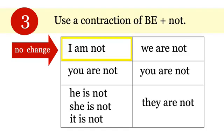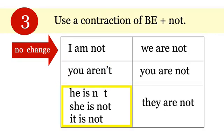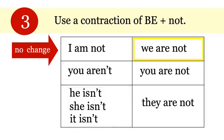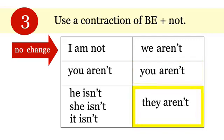There's no change for first person singular, but the rest can use this third way. For 'you are not,' this time we drop the O, make one word with the N and the T, and add the apostrophe — 'you aren't.' For 'he is not,' same thing: drop the O, make one word, don't forget the apostrophe — 'he isn't,' 'she isn't,' 'it isn't.' And the rest all use 'are,' so they look like 'aren't': 'we aren't,' 'you aren't,' 'they aren't.'